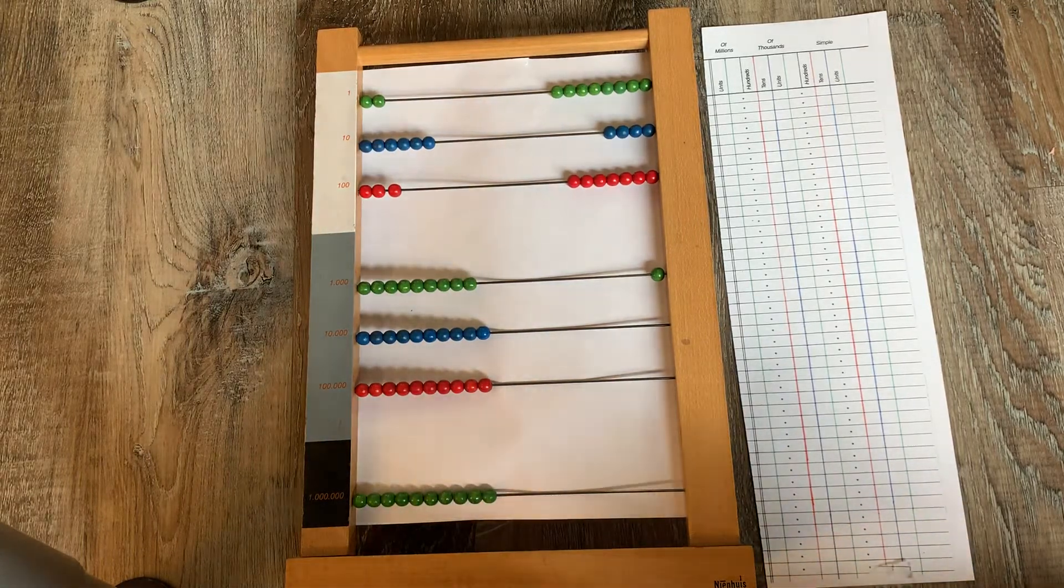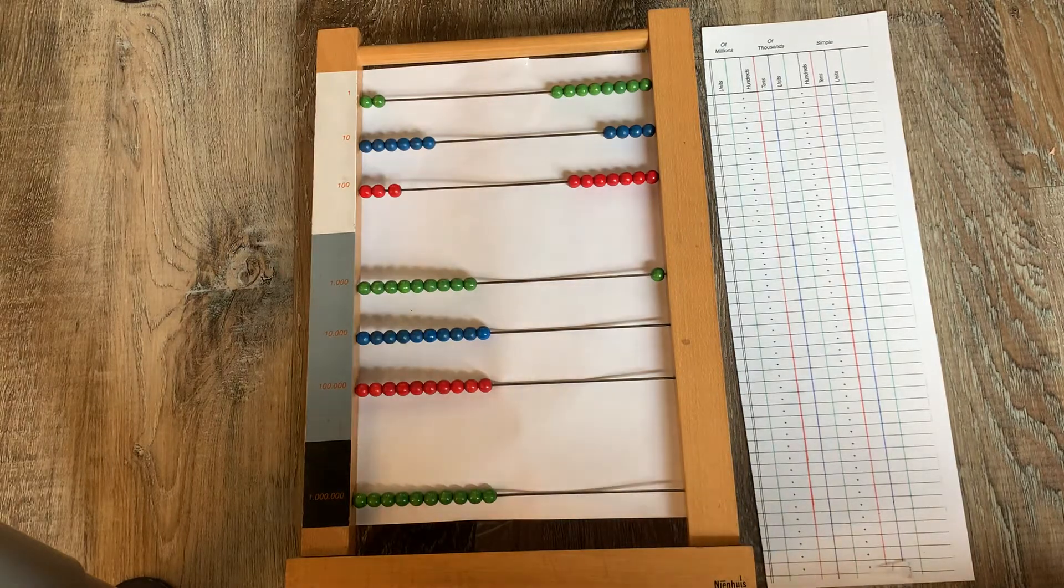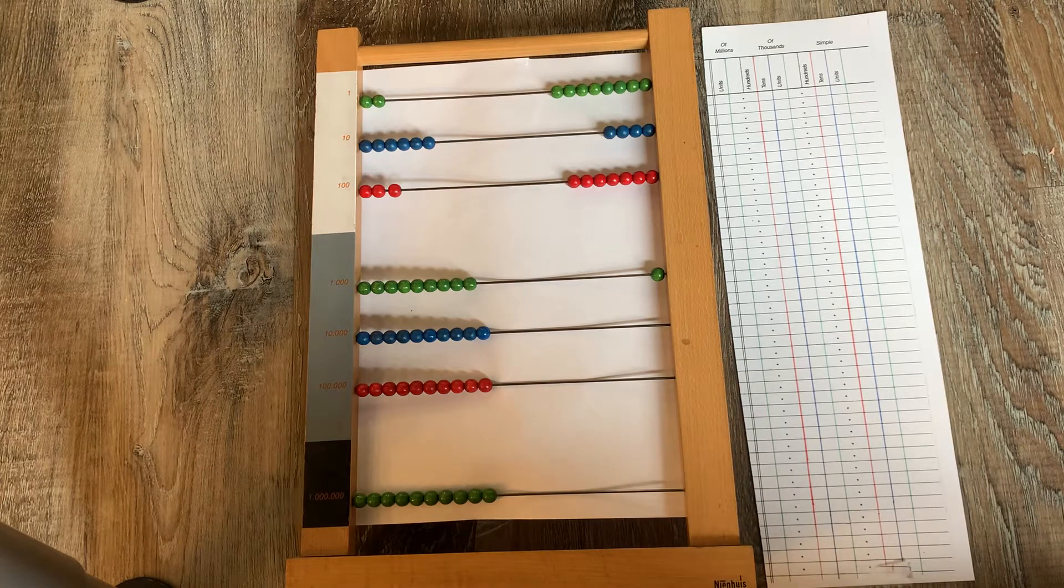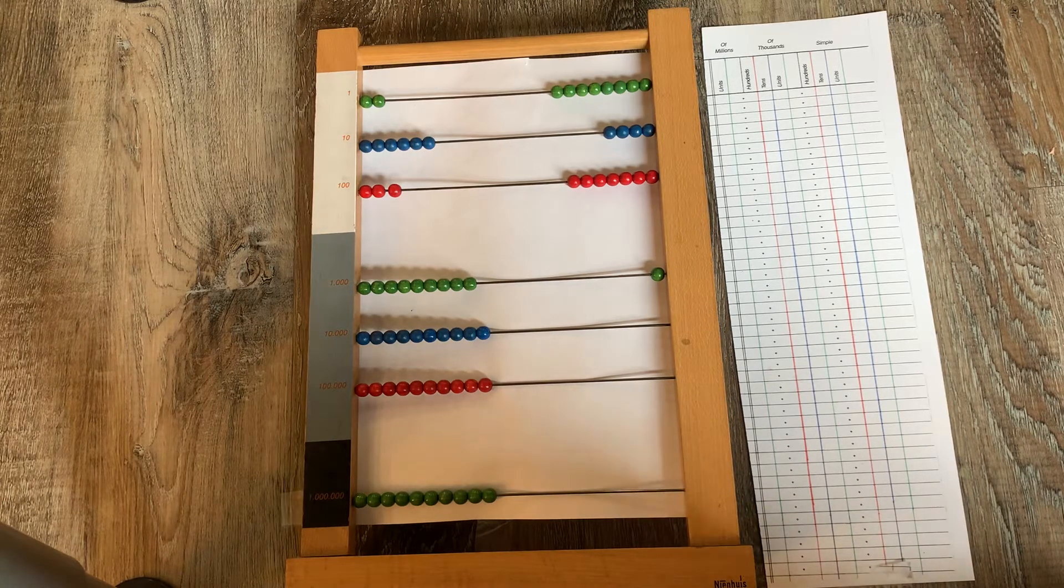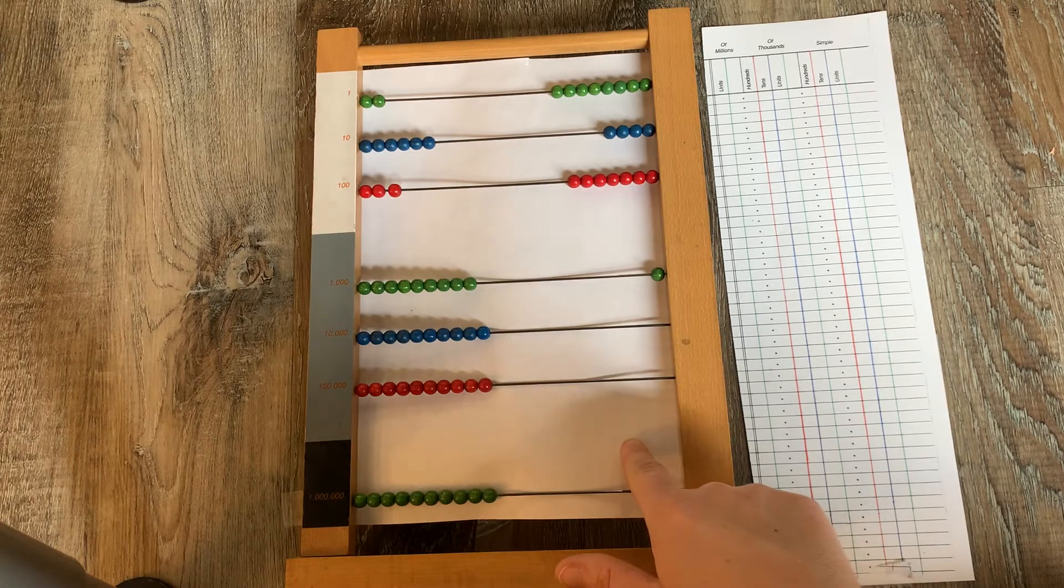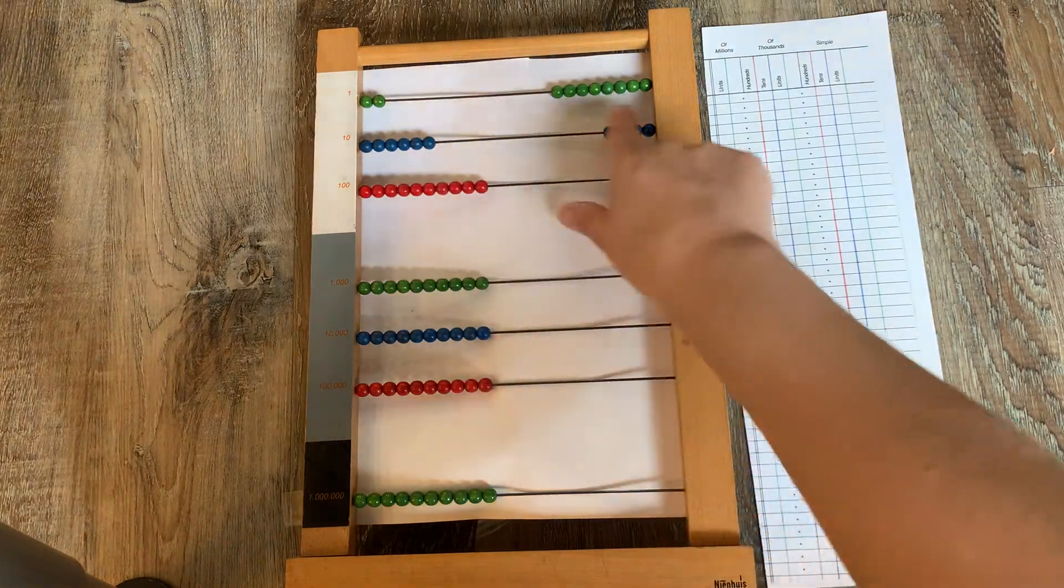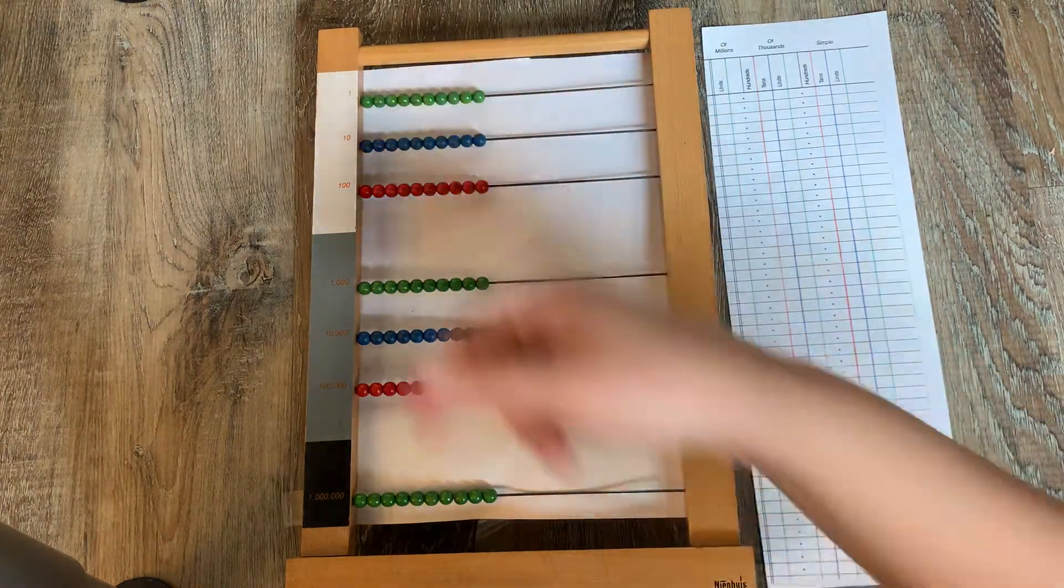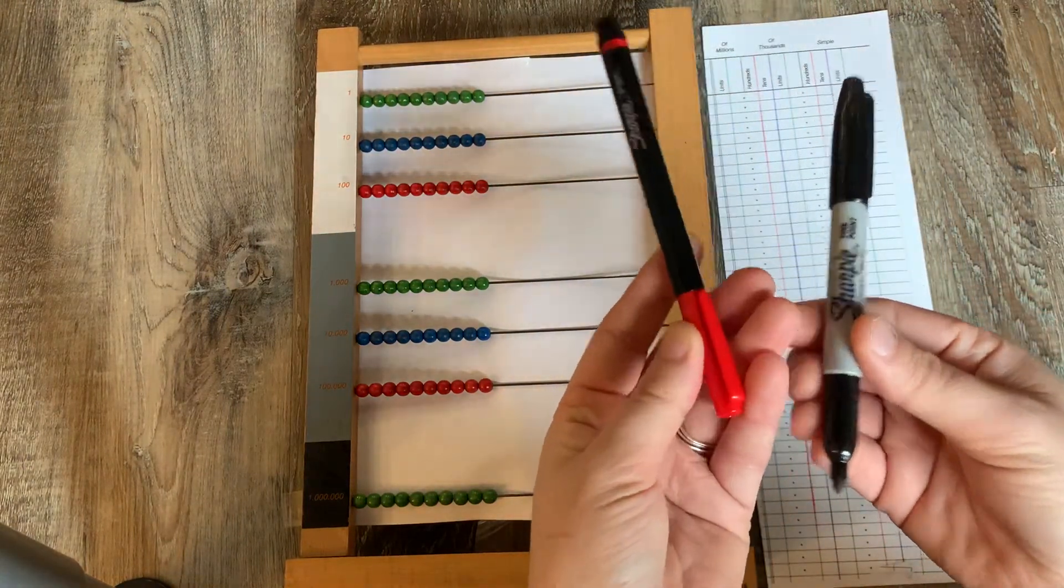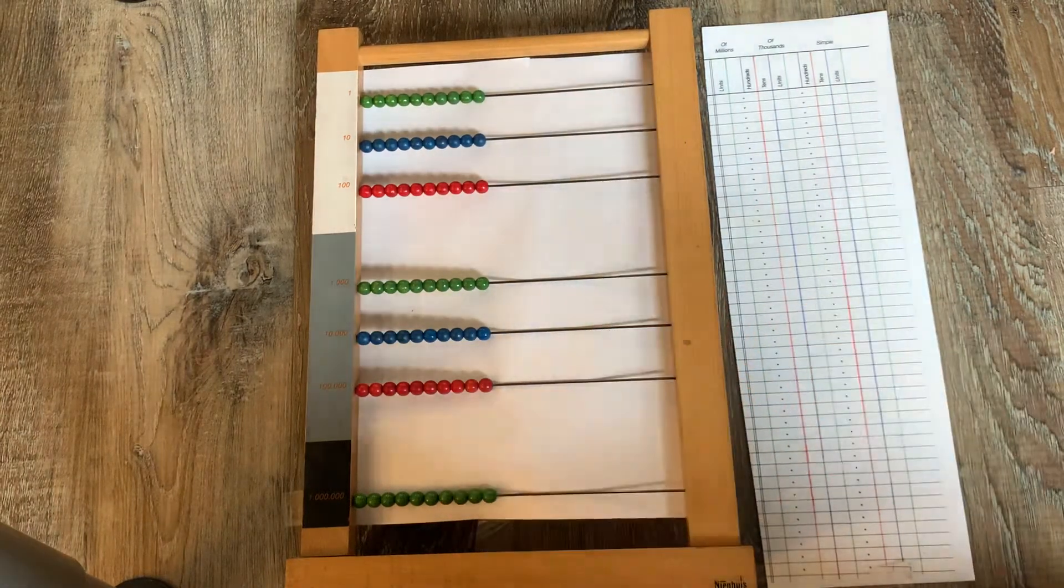This presentation is called the large bead frame multiplication. A note before we begin: when doing the large bead frame, the child will use this upright. For the sake of this presentation it is flat. Also there is no paper behind the large bead frame so that you can all see. We also start with the beads all the way over. I will also be using a black sharpie and a red pen. The child will use a pencil and a red colored pencil. Let's begin.